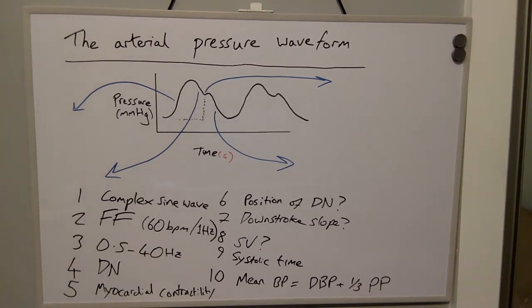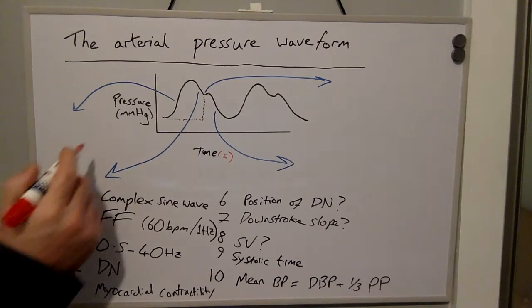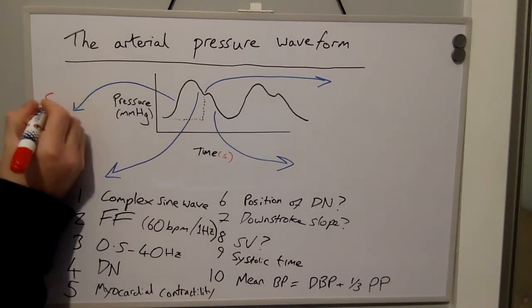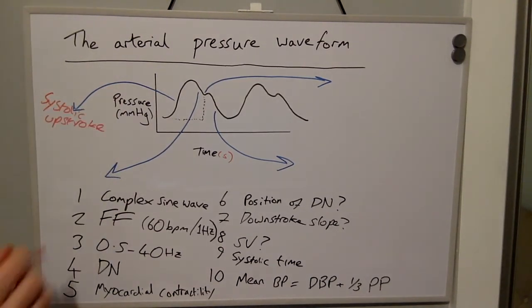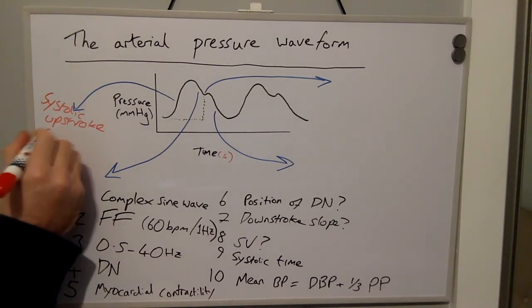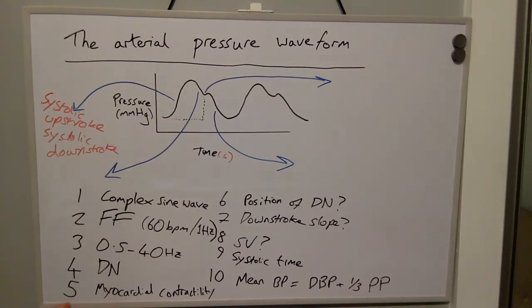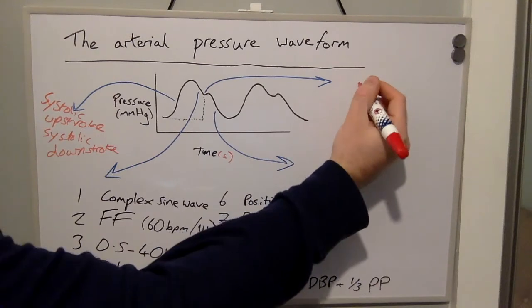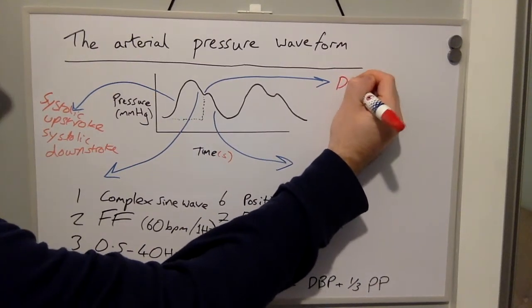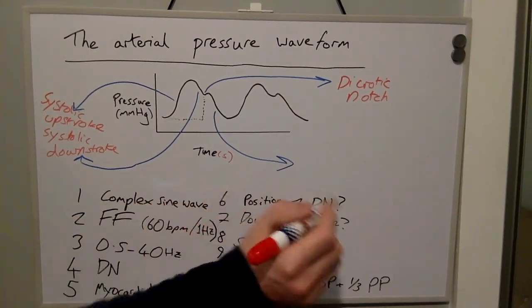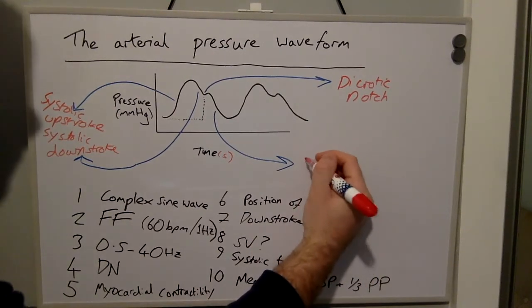First we have the systolic upstroke, next we have the systolic downstroke, then here we have the dicrotic notch, and here we have the diastolic runoff.